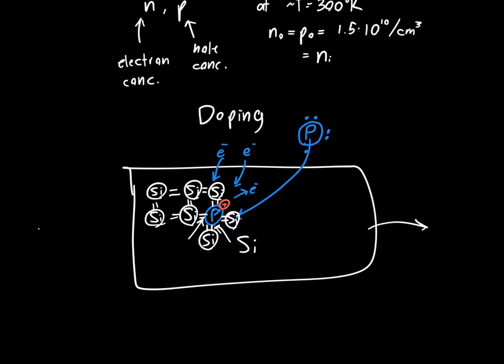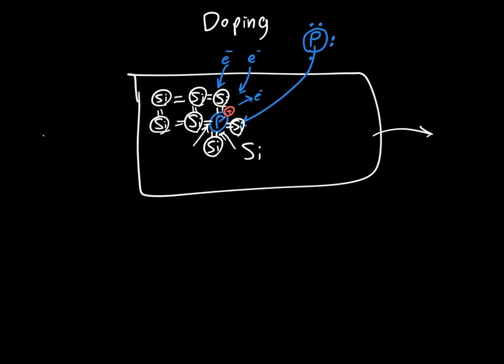So, by adding dopant atoms, we're able to affect the concentration of electrons without affecting the overall system charge and without affecting the number of holes. So, we can increase the number of electrons without a change in the number of holes. So, the number of holes stays constant and the total charge stays the same.